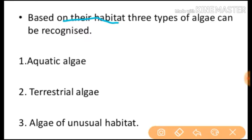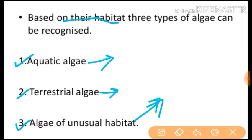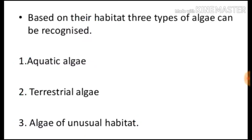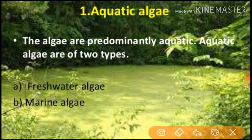Based on their habitat — their living area — we can divide algae into three types: first, aquatic algae; second, terrestrial algae; third, algae of unusual habitat. Aquatic algae are found in marine or freshwater areas. Terrestrial algae are found on land. Algae of unusual habitat are found in rough or extreme environmental conditions.